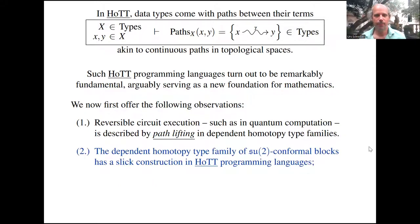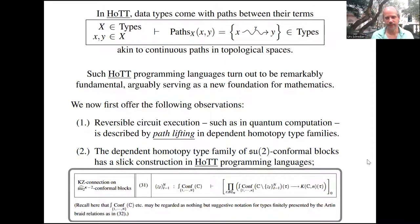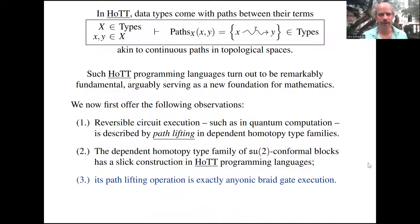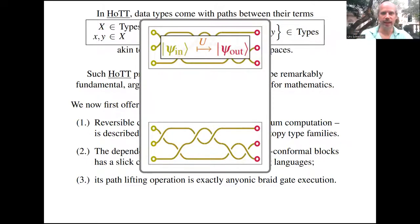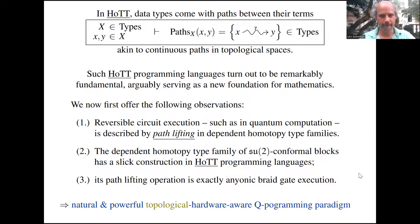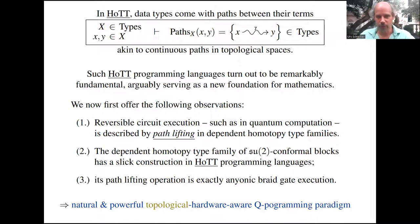But the non-obvious deeper point is that we claim the dependent homotopy type family of SU(2) conformal blocks, which must incarnate these anyon braid gates, actually does have a slick and immediate construction in homotopy type theoretic programming languages. I flash the code, essentially a one-line code once you have the braid group coded. I'm sweeping some slight things under the rug, but there's not much more to it. This constructs the bundle of conformal blocks, which completely tells your computer what you mean by a bundle of conformal blocks. Then the path lifting operation exhibits exactly the anyonic braid gate execution.